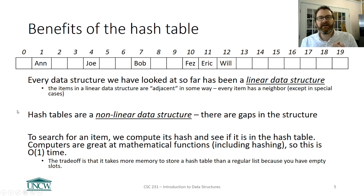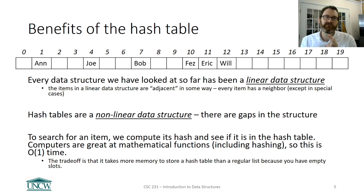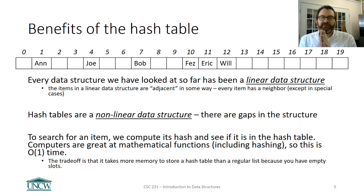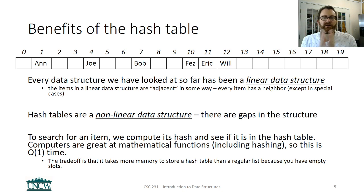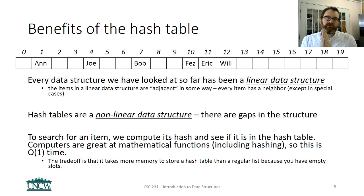Every data structure we've looked at so far has been a linear data structure — the array-based list and the linked list. They were linear because the items in them are adjacent. In a hash table, that is not the case. There are going to be gaps in the data structure. But the hash table has the benefit of O(1) search time.